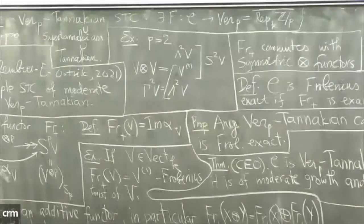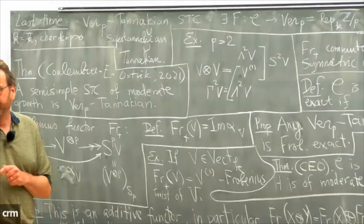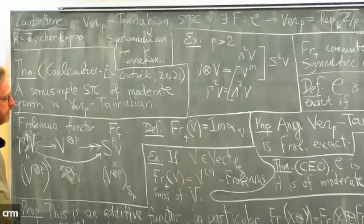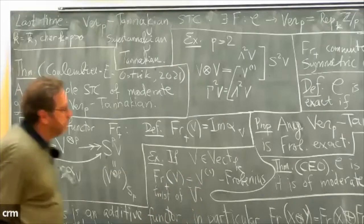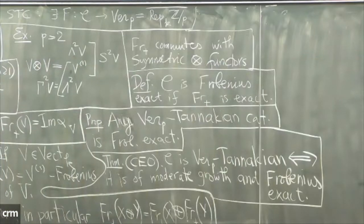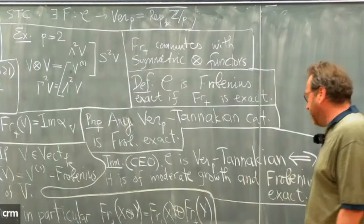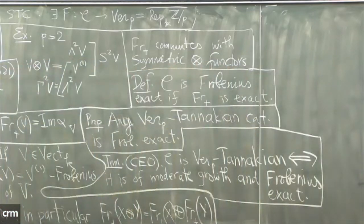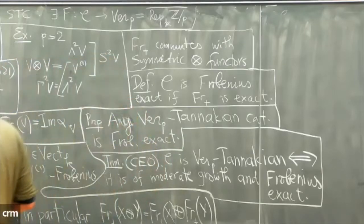The coinvariants are the quotient of V^{⊗p} by the sum of images of (1 − s_i), where s_i are permutations of i and i+1. Question from audience: were Frobenius-exact functors something of interest before ver-p Tannakian categories, or was it the opposite? Answer: the notion was introduced to prove this theorem. It was first proved for fusion categories — semi-simple categories with finitely many simple objects — and then it was realized that when this functor is exact one can generalize the proof, but it took six more years to actually do the job.